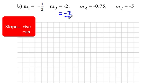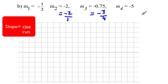Negative two can be expressed as negative two over one. Negative 0.75 is the same as negative three over four. And negative five can be expressed as negative five over one.